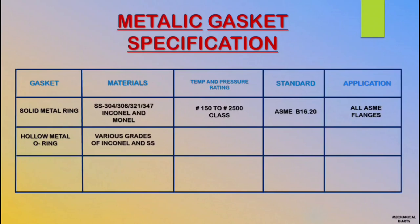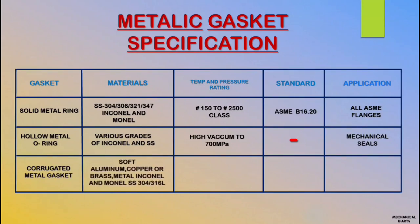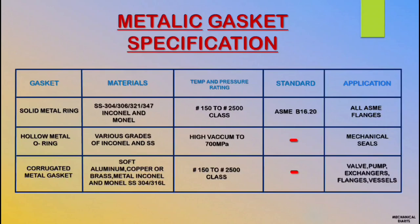Next is hollow metal O-ring gasket. This gasket material is various grades of Inconel and stainless steel. There is no specific temperature and pressure rating — it is used in high vacuum locations only, and there is no standard for this gasket. It is mostly used in mechanical seals. Last metallic type is corrugated metal gasket, which comes in soft aluminum, copper or brass, stainless steel, and Inconel/Monel. Rating is 150 up to 2500. All valve bonnet gaskets and some exchangers use this gasket.